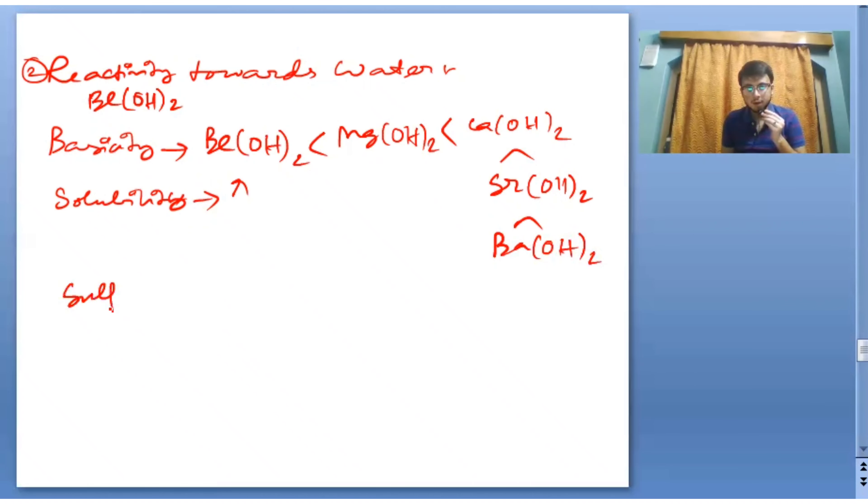Now there is also sulfites. The solubility of sulfites decreases down the group. In case of hydroxides it increases down the group, but in case of sulfites it decreases down the group.